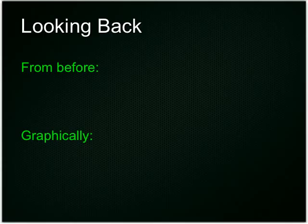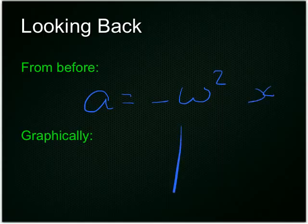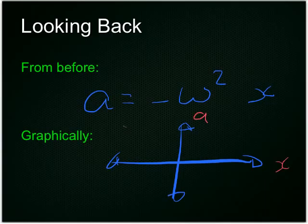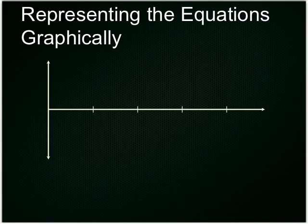So to summarize from before, A equals negative omega squared X. If we graphed it, A versus X, then you'll have a line going down with a negative gradient. And what's the actual gradient value? It's negative omega squared. So we can represent these equations we have found in the last video graphically.